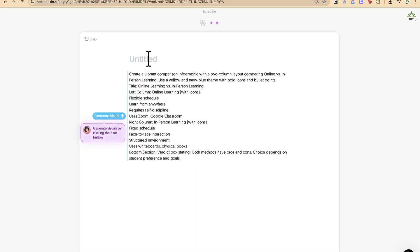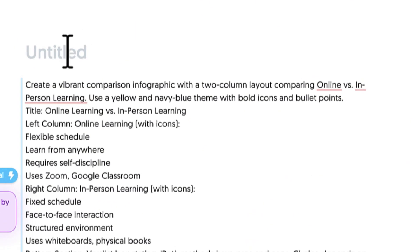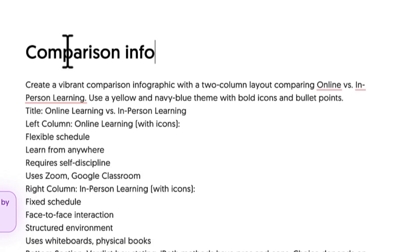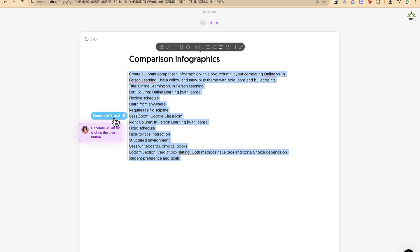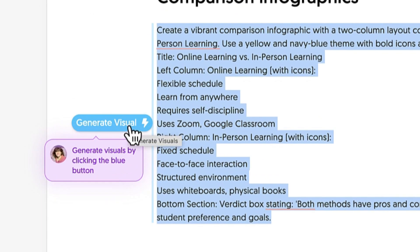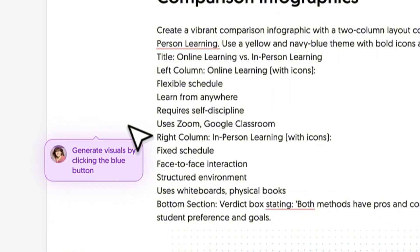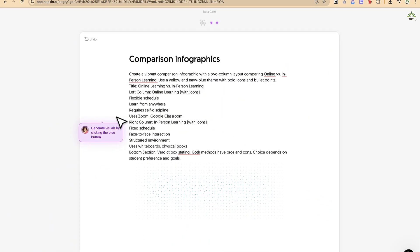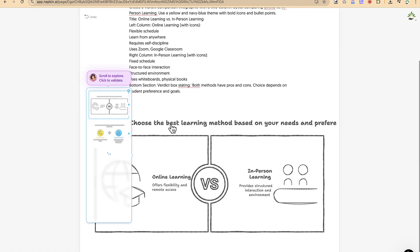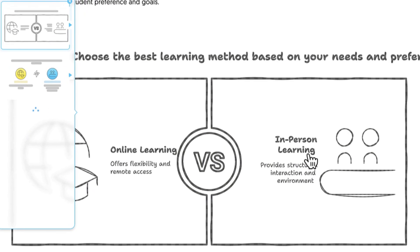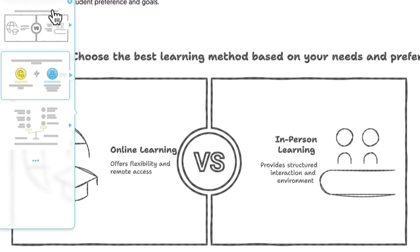You'll need to give it a title — let's say 'Comparison Infographics.' To generate, select everything with Ctrl+A, and you'll see a 'Generate Visual' button appear. Click on it and Napkin will go through the whole idea and generate the visual for you. You can see it has given us the visual: online learning vs. in-person learning — a direct comparison.